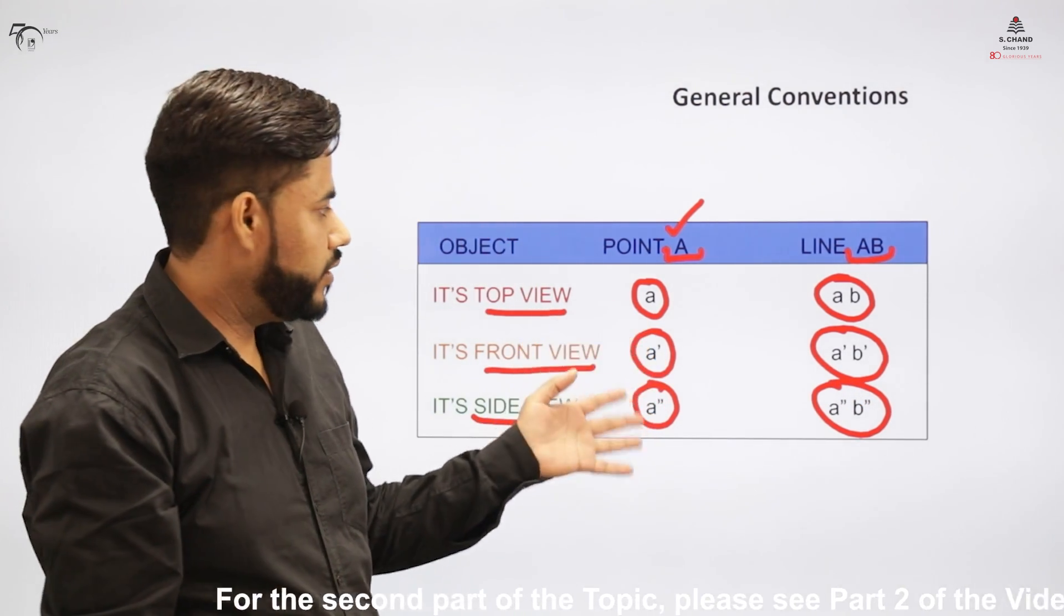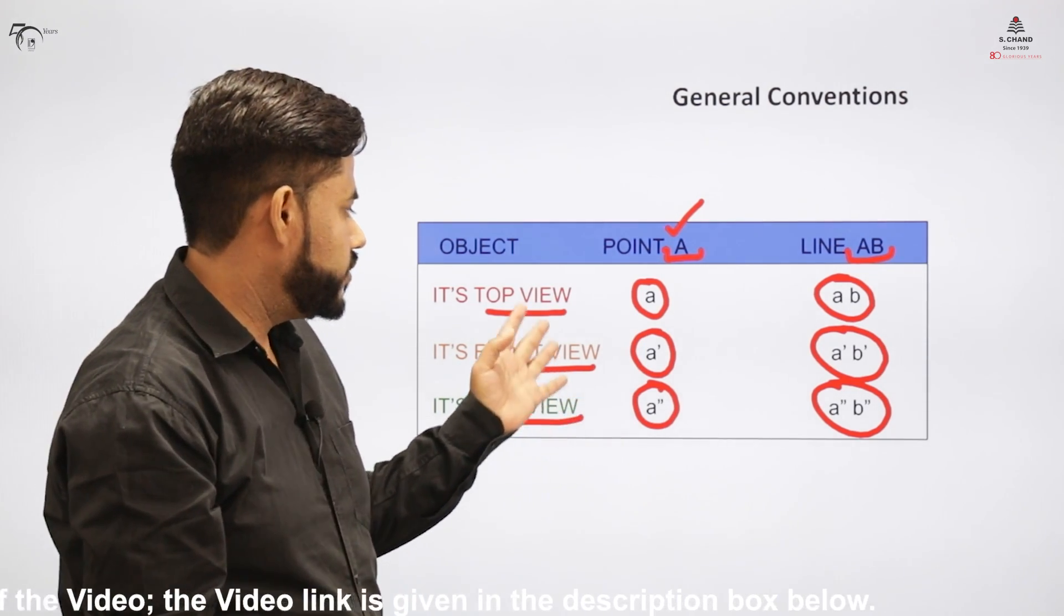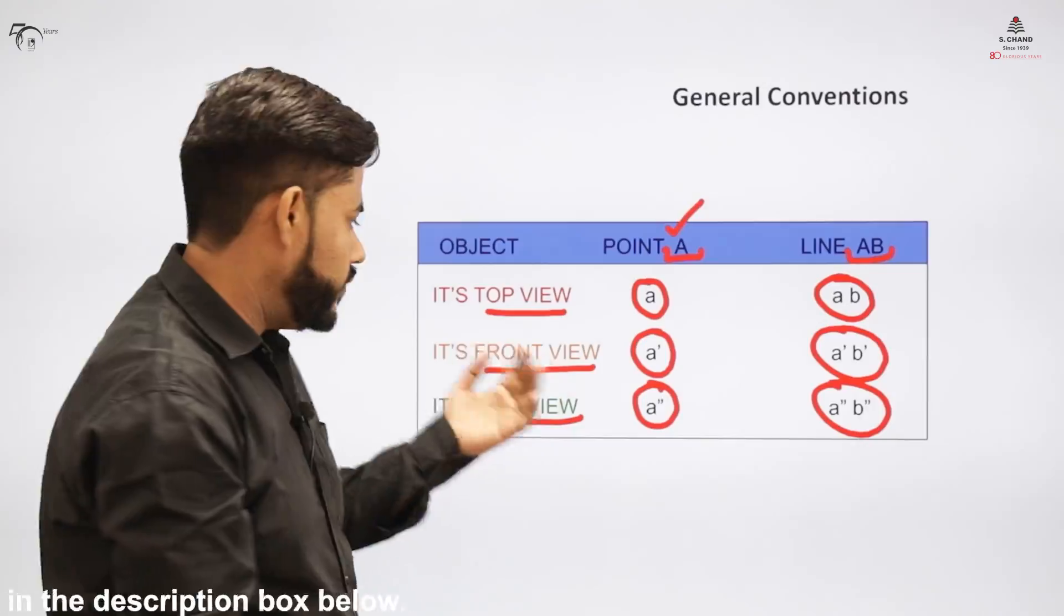You would be using these things in order to indicate the views, the different views, namely front view, top view, or the side view of the object.